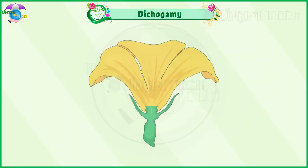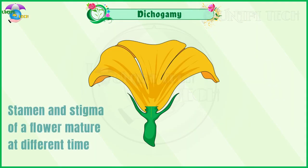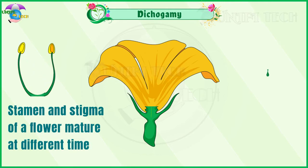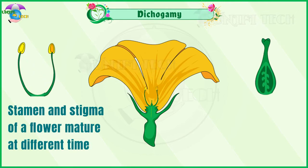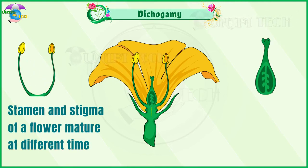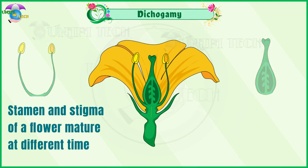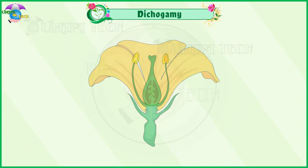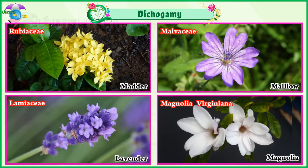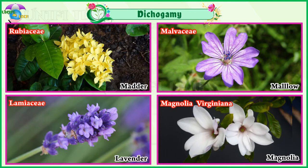Incomplete Dichogamy: In dichogamous flowers, the stamen and stigma of a flower mature at different times. Sometimes the time of maturation of these essential organs overlap, so that it becomes favorable for self-pollination. Examples: Rubiaceae, Malvaceae, Lamiaceae, Magnolia Virginiana.